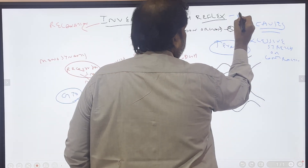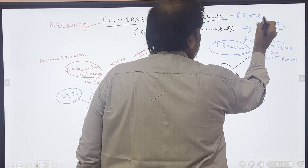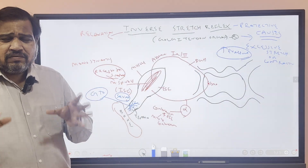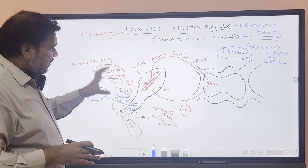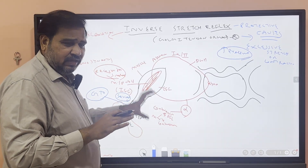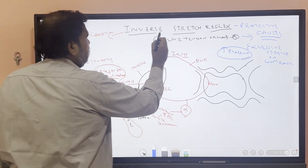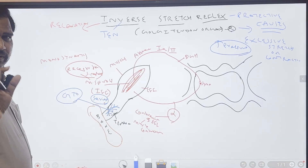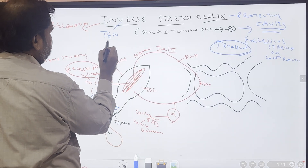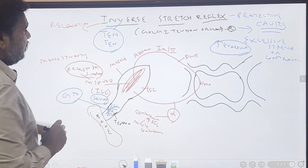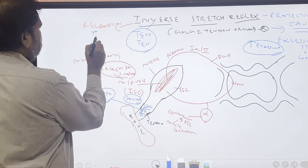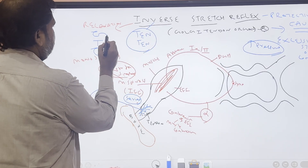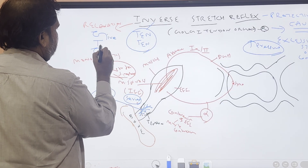Inverse stretch reflex is a protective reflex. The main stimulus is increase in tension — tendon tension. The receptor is Golgi tendon organ and the stimulus is tension. A mnemonic to remember: GTO — Give Tension Out.